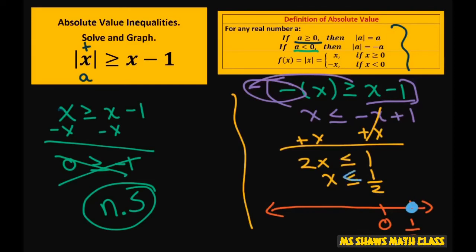But we're shading towards this arrow. These arrows should match, so shade towards that arrow. And that would be x is less than or equal to 1 half. And that's it.